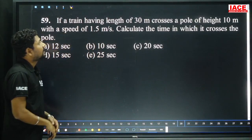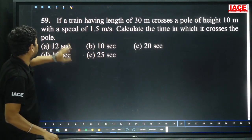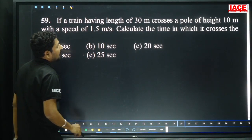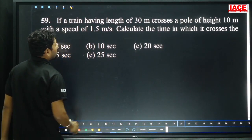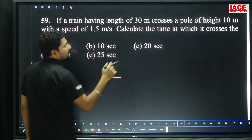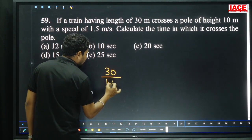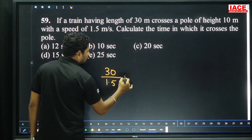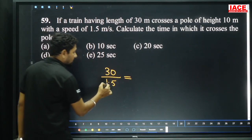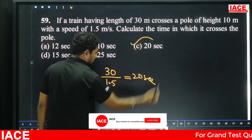A train having a length of 30 meters crosses a pole at a speed of 1.5 meters per second. When crossing a pole, pole length is negligible. Time = distance/speed = 30/1.5 = 20 seconds.